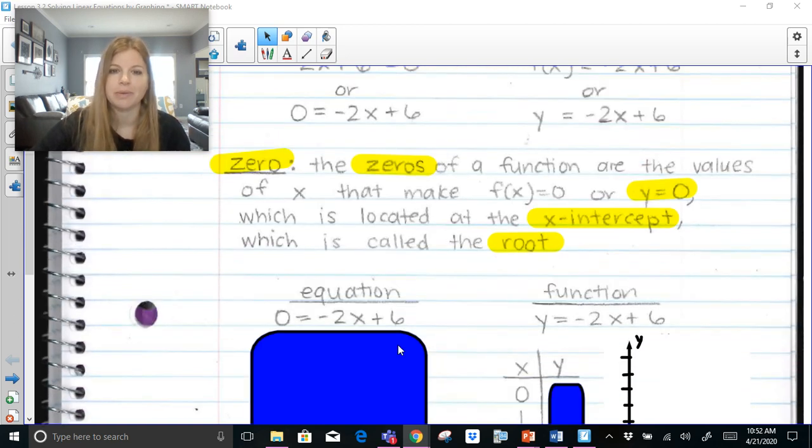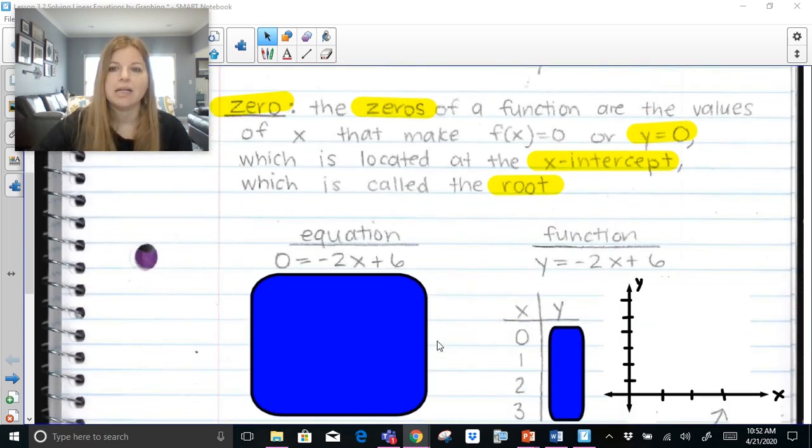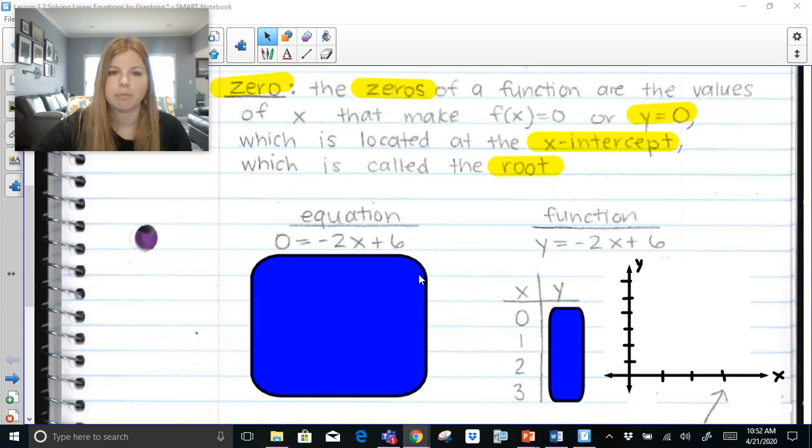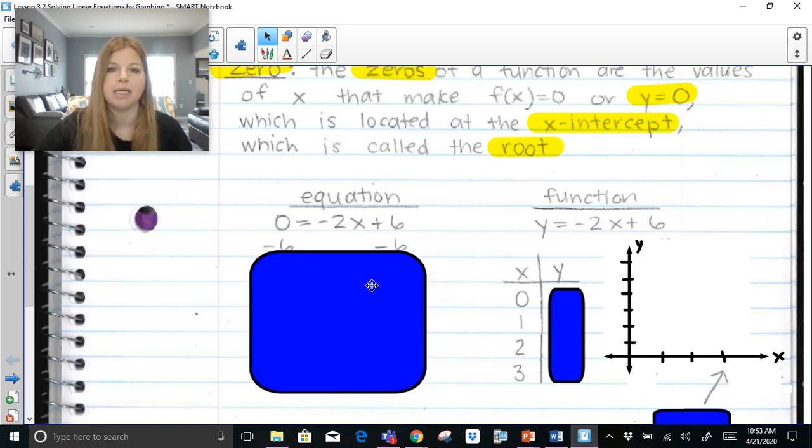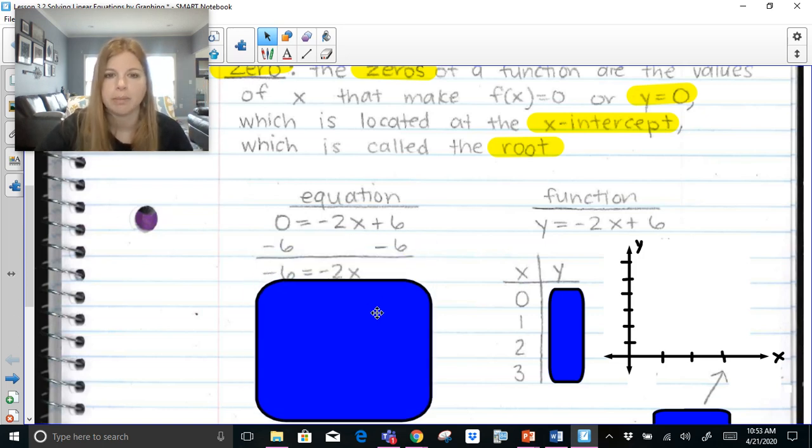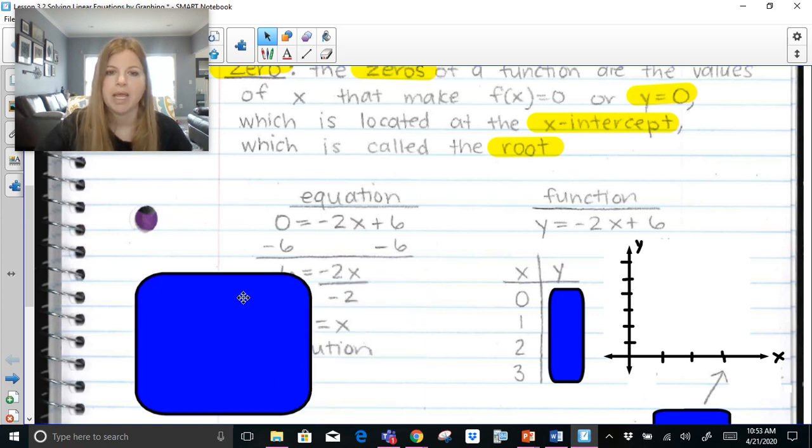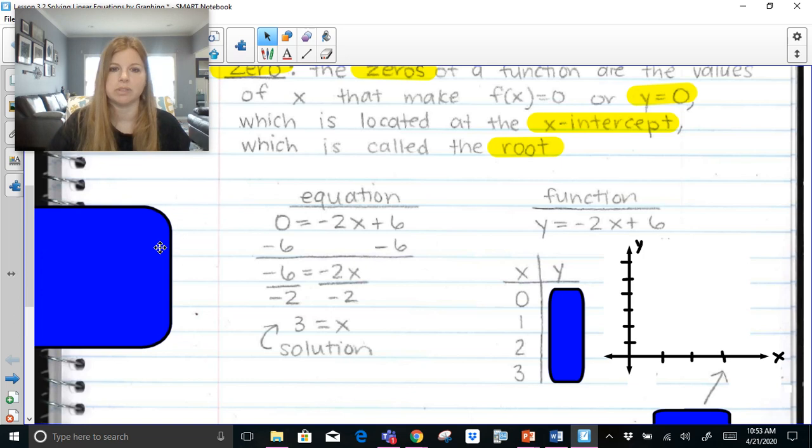So here's what I'm talking about. What does any of this mean? Let's go back to that equation I gave you before. If I gave you this equation, 0 = -2x + 6, and I said to you, go ahead, solve this equation, you would say, okay, I'm going to subtract 6 on both sides. No problem. And then I'm going to divide both sides by -2. No problem. And you end up getting the solution of x = 3. Not difficult at all.